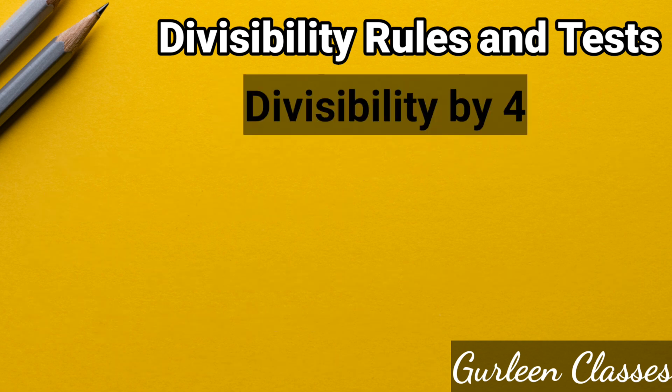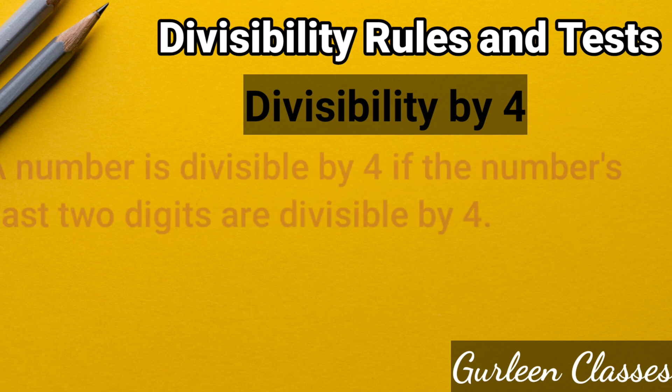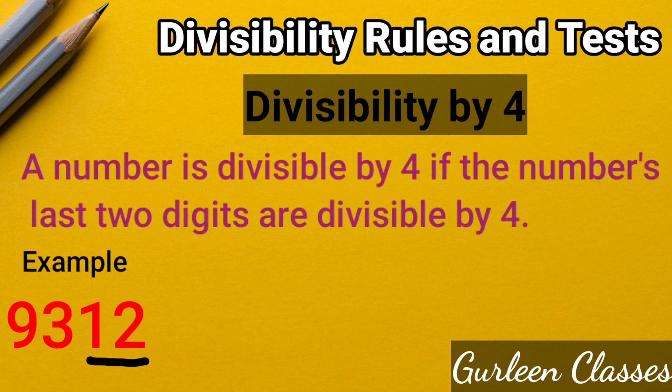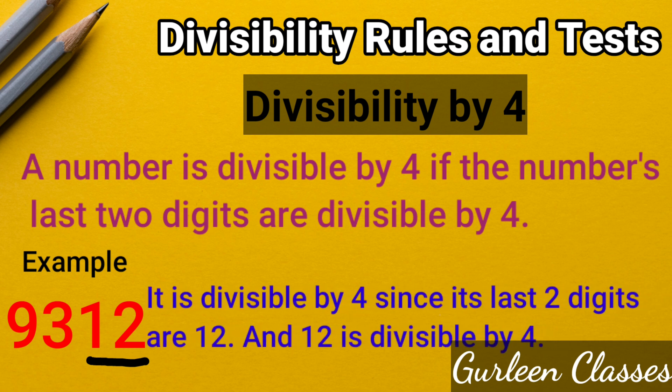Divisibility by 4: A number is divisible by 4 if the number's last two digits are divisible by 4. Example: the number 9312. It is divisible by 4 since its last two digits are 12, and 12 is divisible by 4.